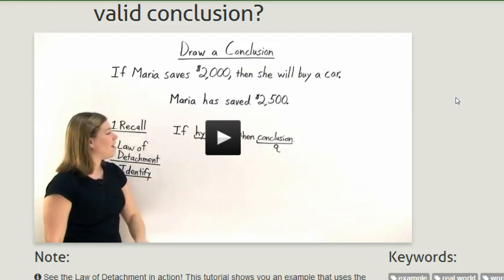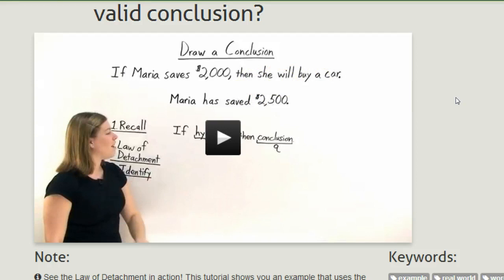then she will buy a car. So the law of detachment says you can go ahead and make the conclusion that she will buy a car based upon that logic.